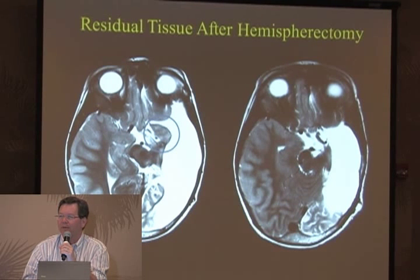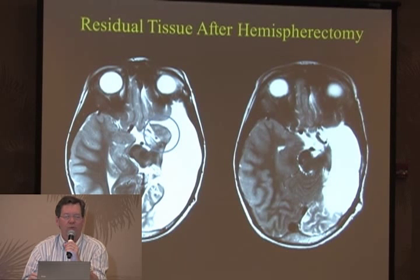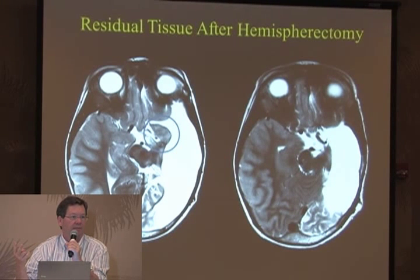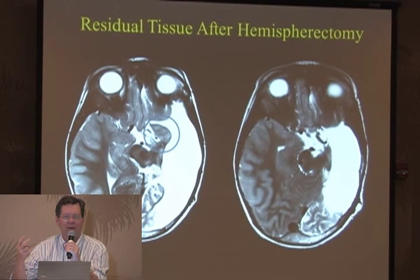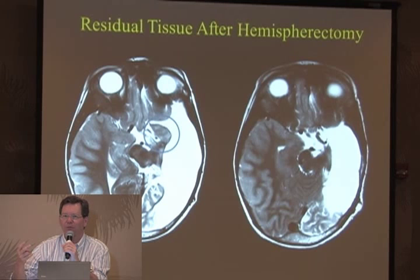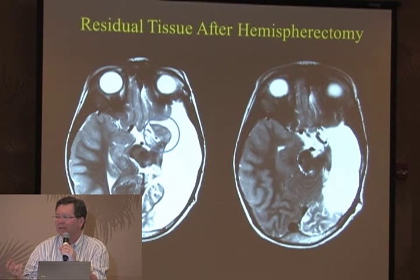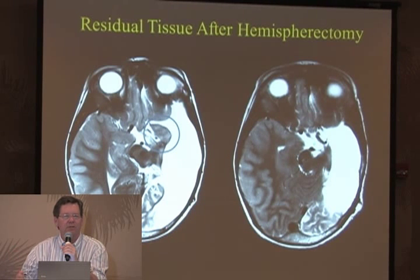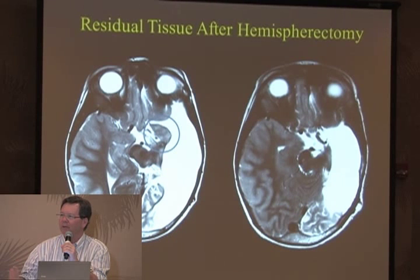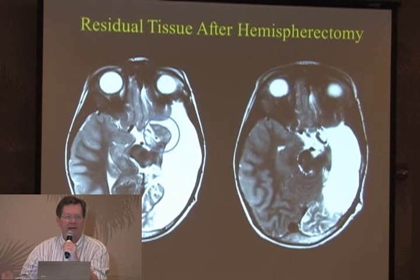In my experience, if you follow kids far enough, a number have recurrent seizures after being seizure-free. The first two questions we ask are: did they develop delayed hydrocephalus, because that can set off seizures? And second, is there something still connected? As one example shows, it took three surgeries before it was done. Sometimes the connections are not even possible to see clearly on imaging. The purpose, as Dr. Shields discussed, is to get your children to the best developmental stage, and the way to do that is to make them seizure-free - so let's hunt until we can get residual seizures taken care of.